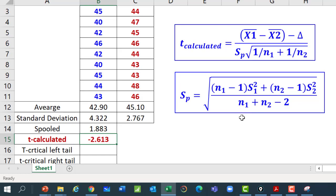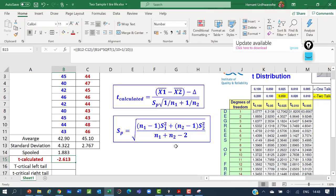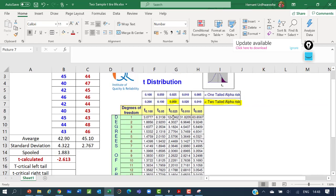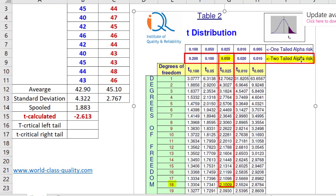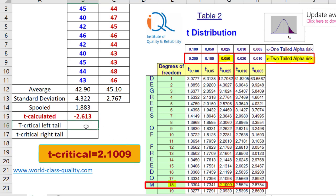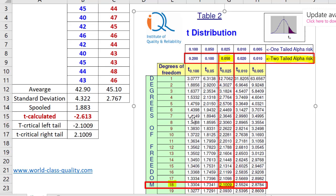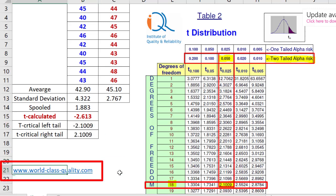Now, this calculated t statistic needs to be compared with the critical value of the t distribution. Let us look at the table now. We have two-tailed alpha risk of 0.05 and 18 degrees of freedom and we can easily see that in the table the critical value of t statistic is 2.1009. Now, since it is a symmetrical distribution, the left tail value will be minus 2.1009 and the right tail value will be plus 2.1009. The t distribution table can be downloaded from our website www.world-class-quality.com.